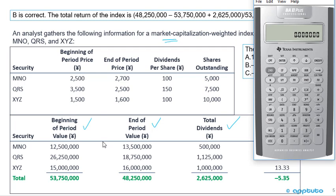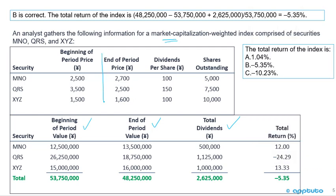For the ending values, we multiply the end of period price by the number of shares outstanding. So 2,700 times 5,000 is 13,500,000; 2,500 times 7,500 is 18,750,000; and 1,600 times 10,000 is 16,000,000. Add these up to get the total ending market capitalization of 48,250,000.